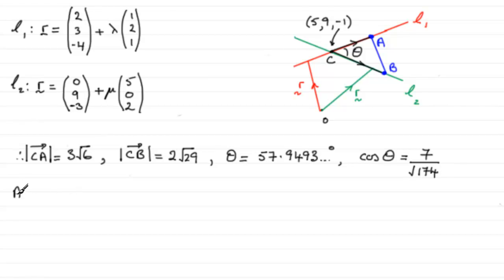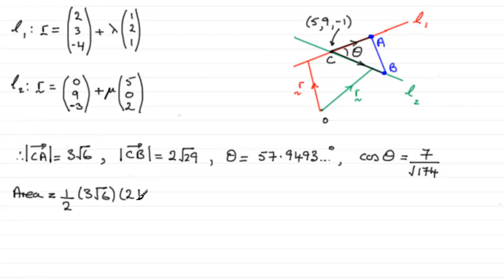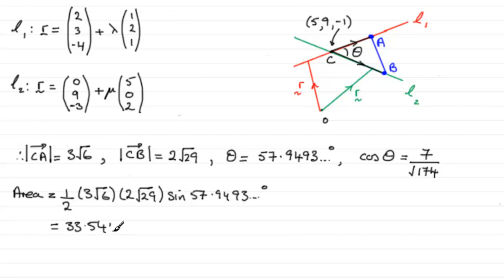But whatever we do, we know that the area of the triangle is going to equal half the product of two sides — that would be CA and CB — times the sine of the included angle, often known as the formula half A B sine C. So it's going to be half, multiplied by 3 root 6, multiplied by 2 root 29, and then multiplied by the sine of the included angle, 57.9493 odd degrees. And if you work that out, you find that you get 33.5410 and so on.